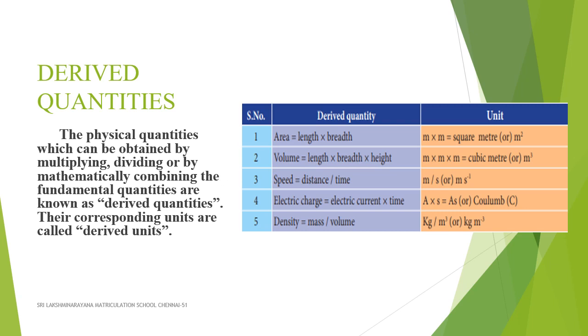For example, area is one of the physical quantities. The expression of area is length into breadth. Here, length is a fundamental quantity. So, the area is derived from the fundamental quantity. Therefore, area is a derived quantity.